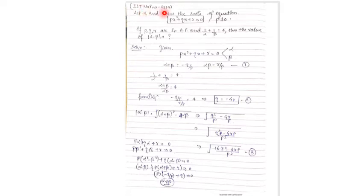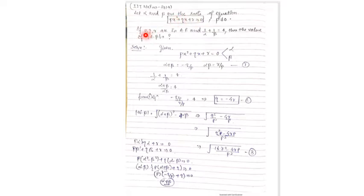Here is the question from IIT Mains 2014. Let alpha and beta be the roots of px² + qx + r = 0, where p ≠ 0 — this condition ensures it is quadratic; if p = 0 it becomes linear. Additional conditions given are that p, q, r are in AP, and 1/alpha + 1/beta = 4. We must find the value of |alpha - beta|.